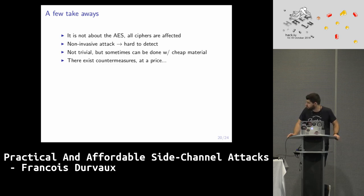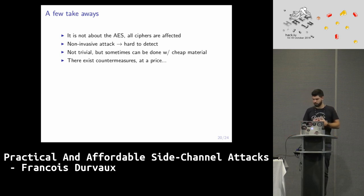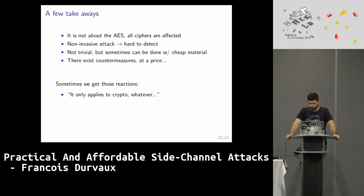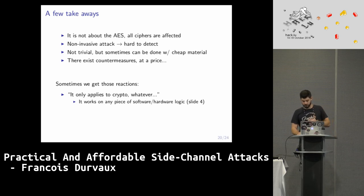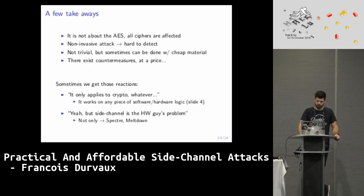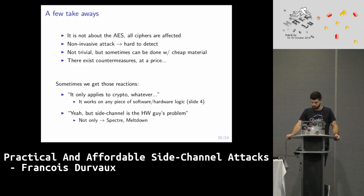There exist countermeasures — a wide range of them. But usually the more efficient the countermeasure, the more you decrease the performance of your implementation. It comes at a price. The reaction we often hear is that it only applies to crypto, but this is not true, because as I showed at the beginning, people use it to attack anything that was secret at some point. Or people say it's only the problem of the hardware guy, which is not entirely true — because if you take the Spectre and Meltdown attacks, it was done remotely and was not only the problem of the hardware guy.